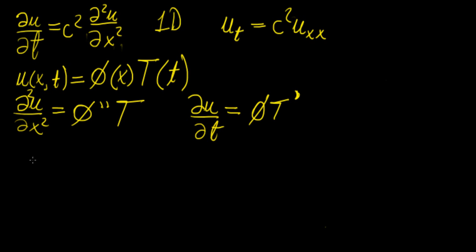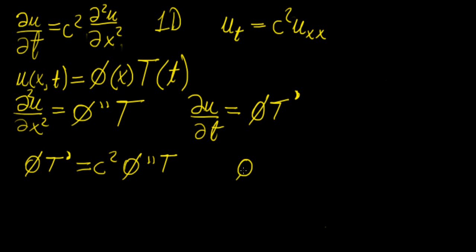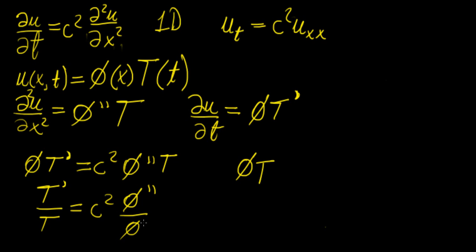Now that we have those derivatives, we substitute into the original PDE: T' = c² · ψ'' · T. We want to separate all the T's on one side and all the ψ's on the other, so we divide through by ψT. This gives us T'/T = c² · ψ''/ψ, or equivalently (1/c²) · T'/T = ψ''/ψ. We move c² to the other side for convenience — we'll see that it's better to have the constant there.